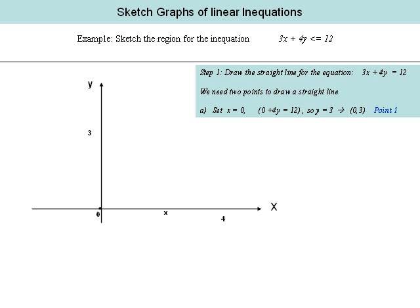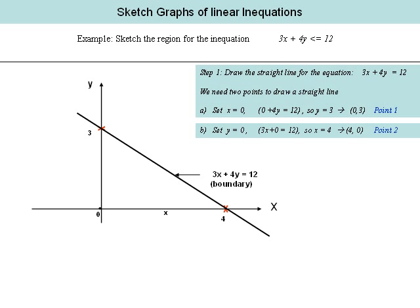To get our first point, we set x to zero and solve for y. We get 0 plus 4y equals 12, so y equals 3, giving our first point as (0, 3) on the y-axis. To get the second point, we set y to zero and solve for x. We have 3x plus 0 equals 12, so x equals 4, giving our second point as (4, 0). We then draw a straight line through those two points.